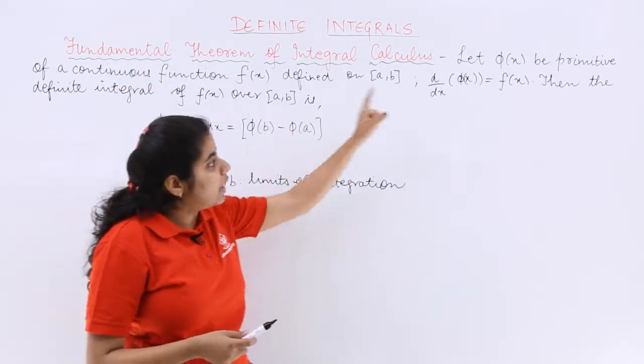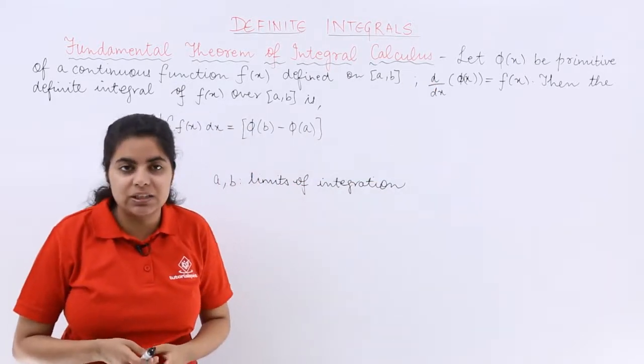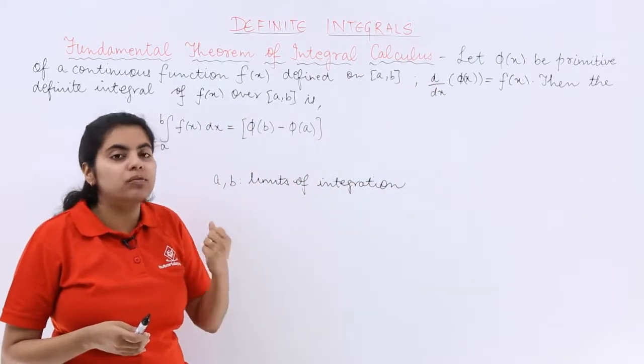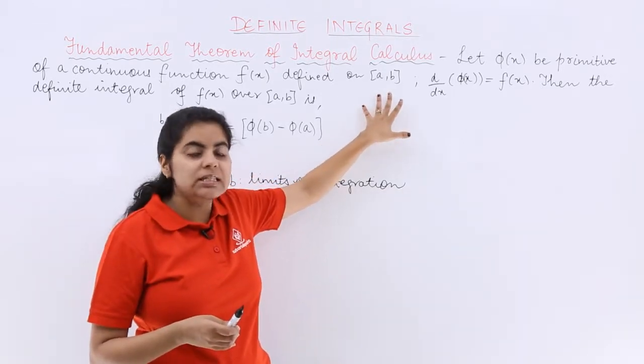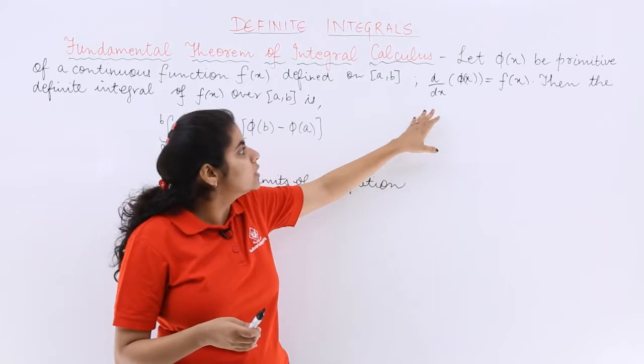Let φ(x) be primitive of a continuous function f(x). That means φ(x) is the anti-derivative - primitive means anti-derivative of a function f(x) which is continuous on [a,b].